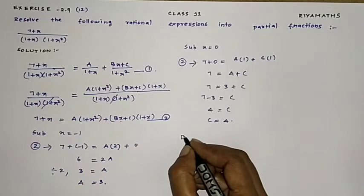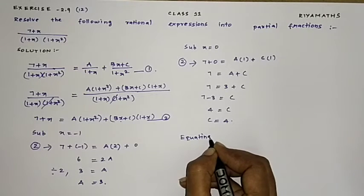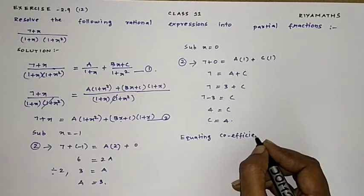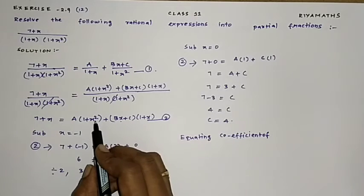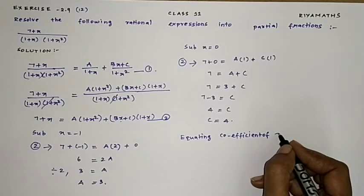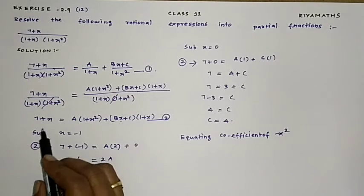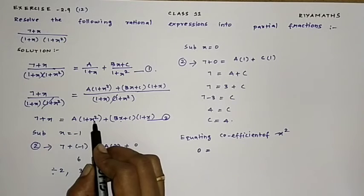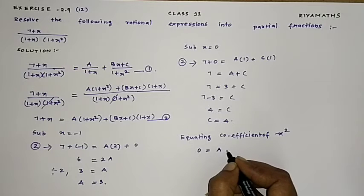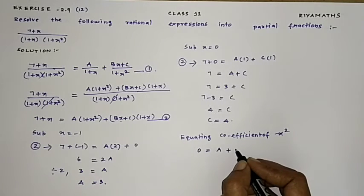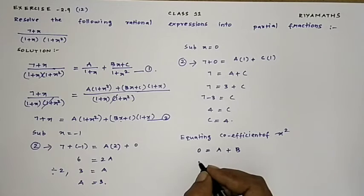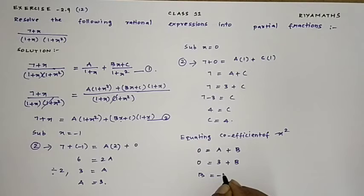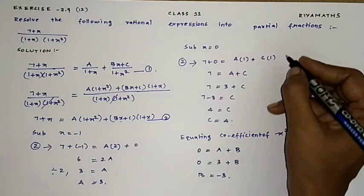Next, equating coefficient of X²: On the left side, the coefficient of X² is 0. On the right side, we have A from the X² term plus B. So 0 = 3 + B. Therefore, B = -3.